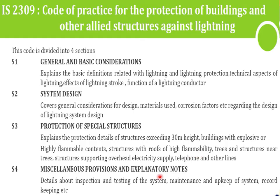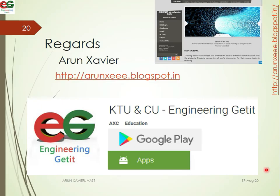The last section covers miscellaneous provisions and explanatory notes, including inspection, testing, and maintenance of the lightning protection system, upkeeping the system, record keeping, and maintenance checks. So that covers the two IS codes. We will be explaining the other codes in the next video. See you all in my next video.